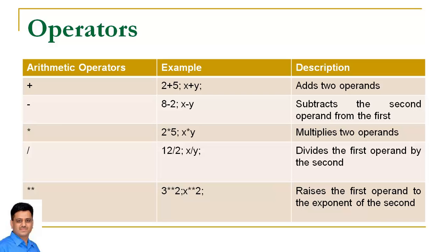As in all other programming languages we also have operators. These slides indicate the usage of arithmetic operators. We have operators like plus, which is used to add two operands; minus, which is used to subtract two operands; multiplication; division; and exponent. Exponent is used to raise the first operand to the power of the second — for example, 3 exponent 2 returns 9 because 3 raised to power 2 equals 9.